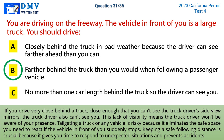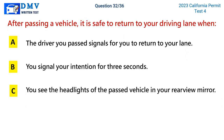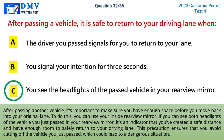Question 32: After passing a vehicle, it is safe to return to your driving lane when. A) the driver you pass signals for you to return, B) you signal your intention for three seconds, C) you see the headlights of the passed vehicle in your rear view mirror. The correct answer is C. After passing another vehicle, use your inside rear view mirror — if you can see both headlights of the vehicle you just passed, you've created a safe distance and have enough room to safely return to your driving lane. This precaution ensures you avoid cutting off the vehicle you just passed.